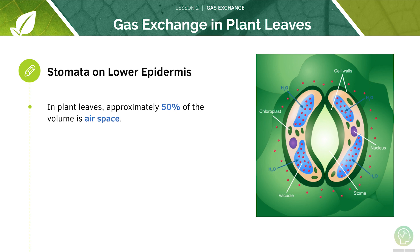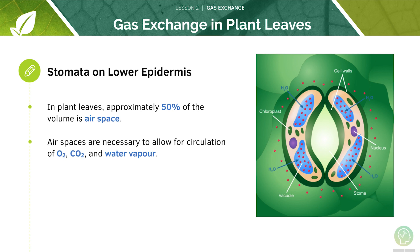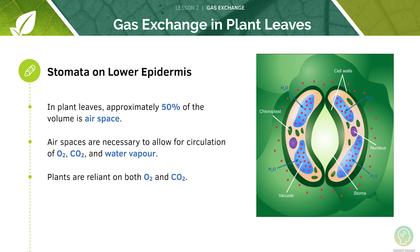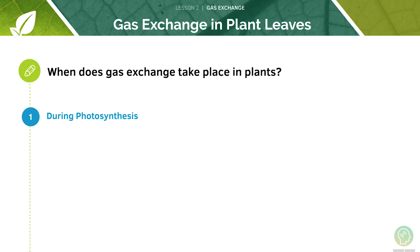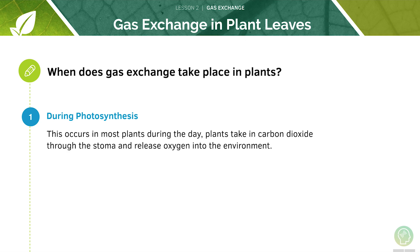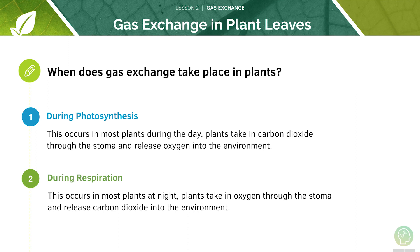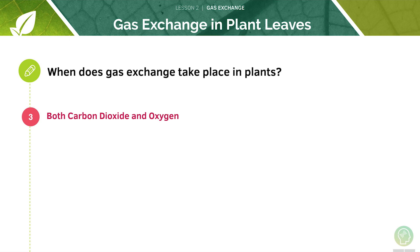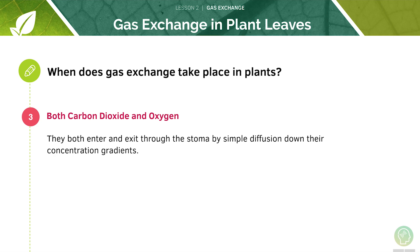In plant leaves, approximately 50% of the volume is air space. The presence of air spaces is necessary to allow for the proper circulation of oxygen, carbon dioxide, and water vapour. Unlike other organisms, plants are reliant on both carbon dioxide and oxygen. Gas exchange can happen during photosynthesis, which occurs in most plants during the day, when they take in carbon dioxide through the stomata and release oxygen into the environment. It also occurs during respiration, which occurs mostly at night, when they take in oxygen through the stomata and release carbon dioxide. Both gases enter and exit the stomata by simple diffusion down their concentration gradients.